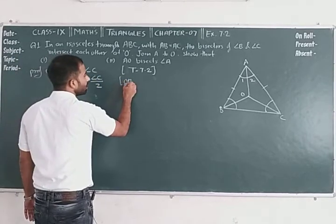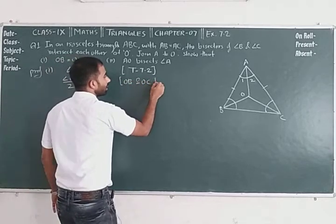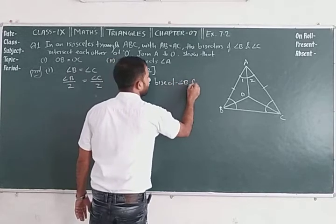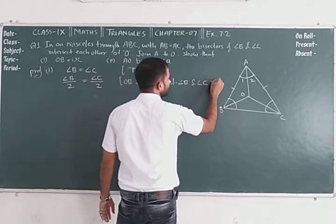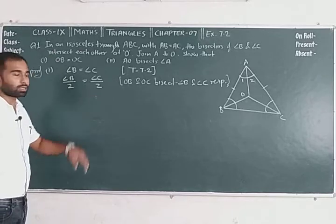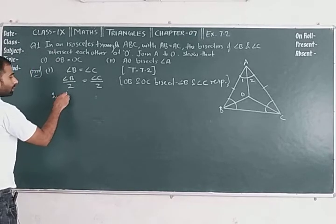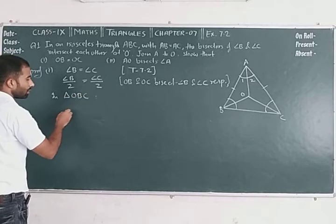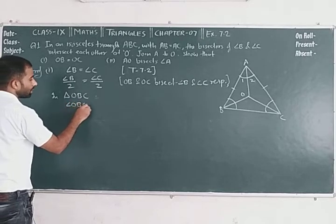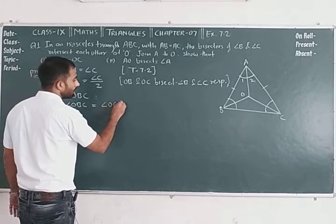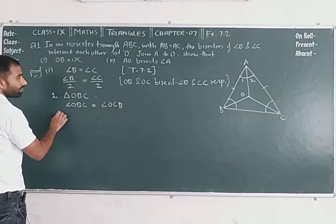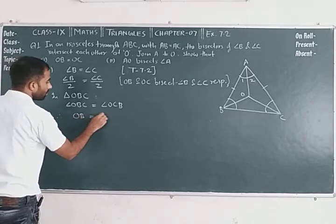Because OB and OC bisect angle B and angle C respectively, their halves will also be equal. So in triangle OBC, half of angle B we write as angle OBC, which is equal to angle OCB. By Theorem 7.3, therefore side OB is equal to OC.